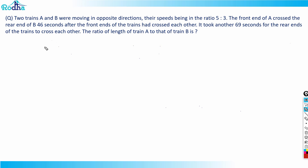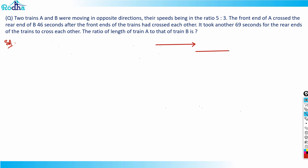Let's look at the next question from CAT 2021 Slot 2 — it's about the time and distance topic. The question says two trains A and B were moving in opposite directions, with their speeds in the ratio 5 to 3. Let's make a diagram with train A here and train B here. The speed of train A is 5x and its length, not given, is L1.